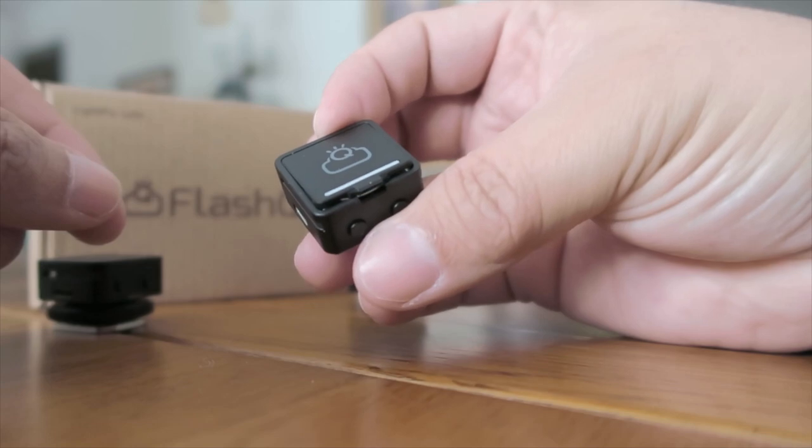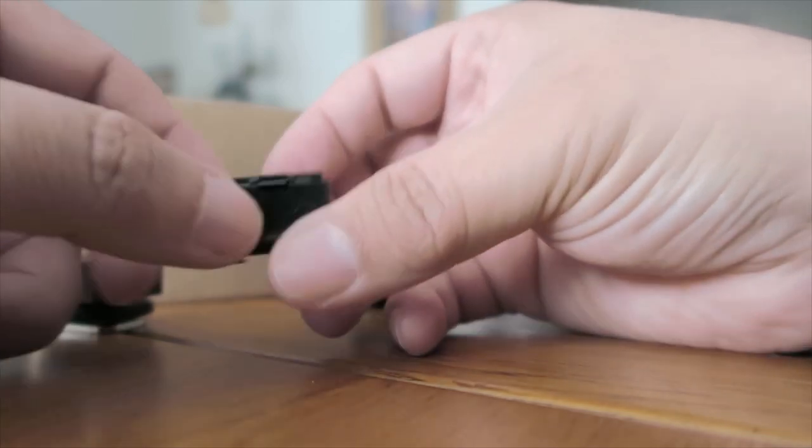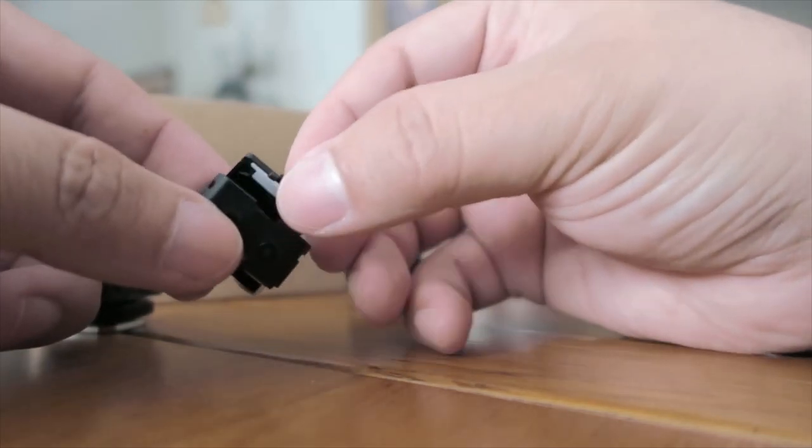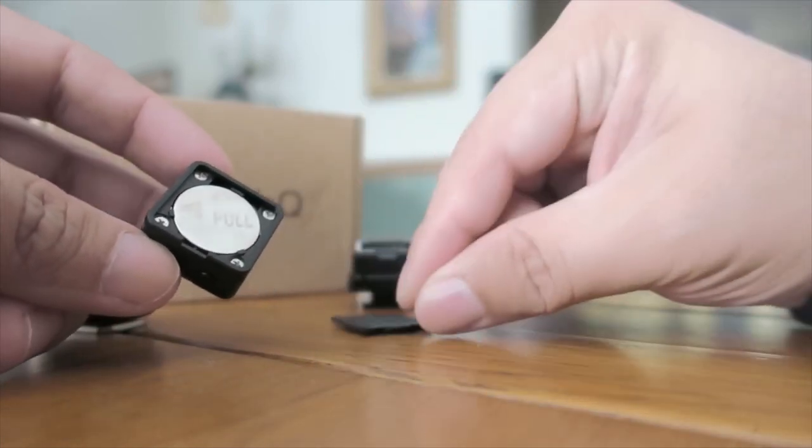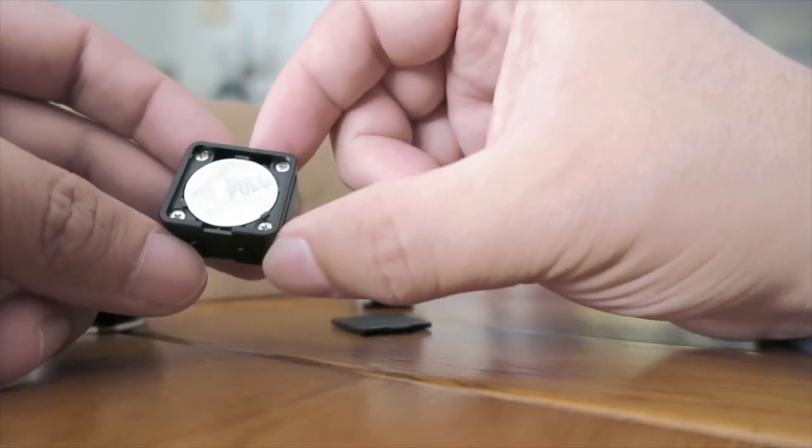And when you pull that up, it's just this little piece of plastic. You just pull this door off, and then you can access the battery.